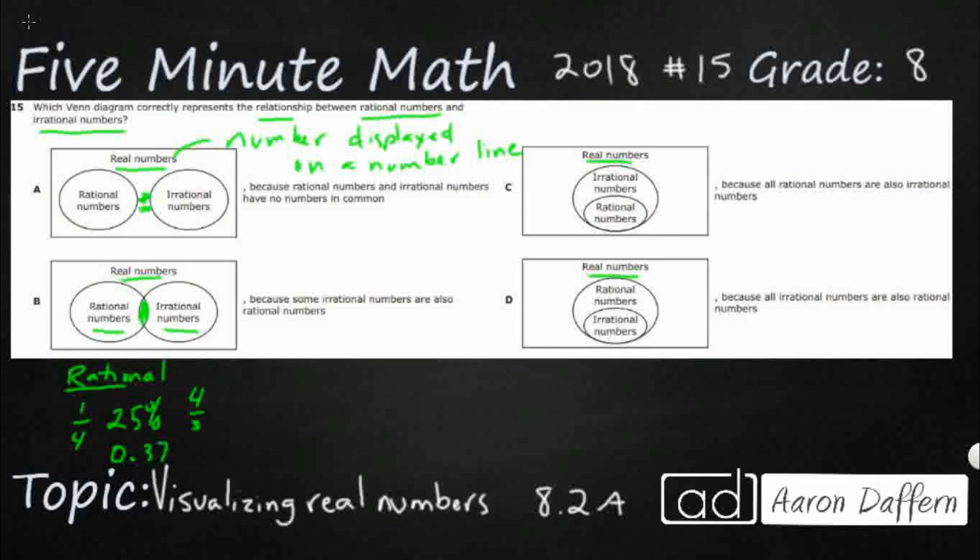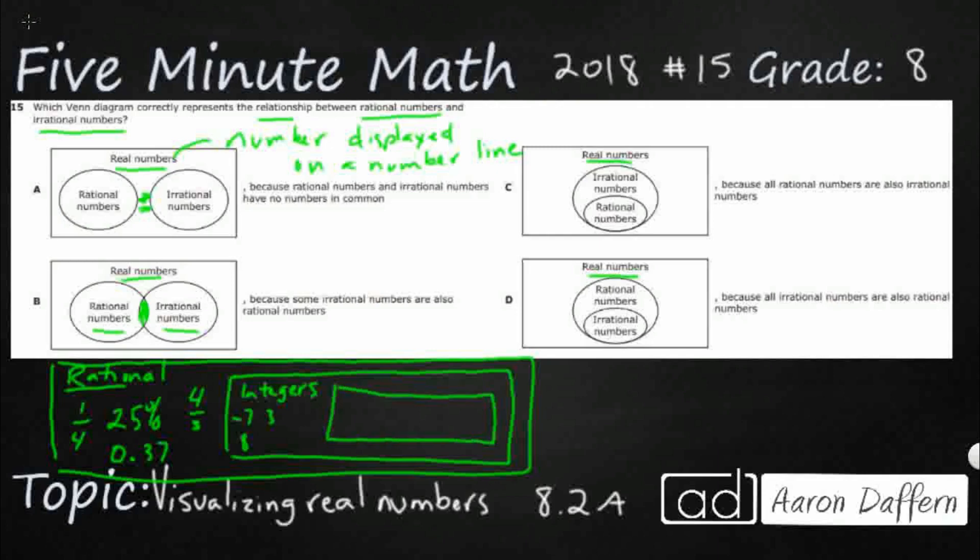Now, within the rational numbers, I'm going to kind of do it like this. It's going to be kind of like a strange sideways Venn diagram. We've got a smaller set. We've got integers. So your integers are going to be whole numbers, positive or negative, negative 7, 8, 3. Within that, you get a smaller number of, you've got the whole numbers.